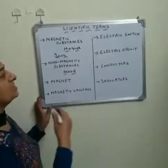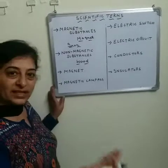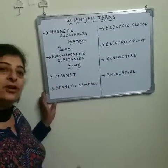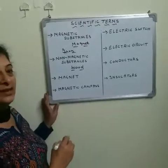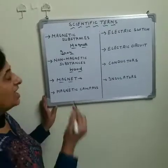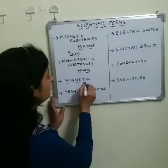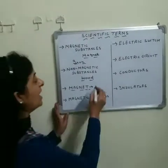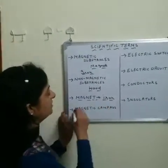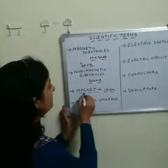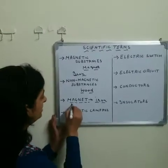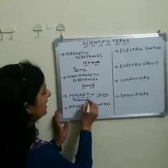So magnetic substances are those which are attracted by the magnet, and non-magnetic substances are those which are not attracted by the magnet. Now the question is: what is a magnet? A magnet is a substance which attracts iron towards it.